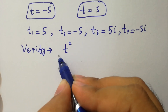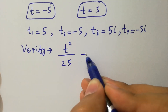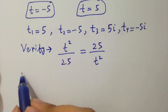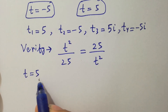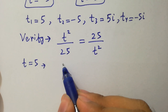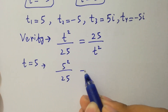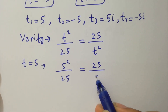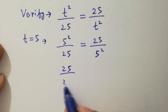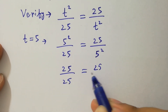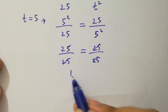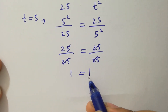Verify using t squared over 25 equal to 25 over t squared. Putting t equal to 5: 5 squared over 25 equals 25 over 5 squared, which gives 25 over 25 equal to 25 over 25, so 1 equals 1. Left hand side equals right hand side.